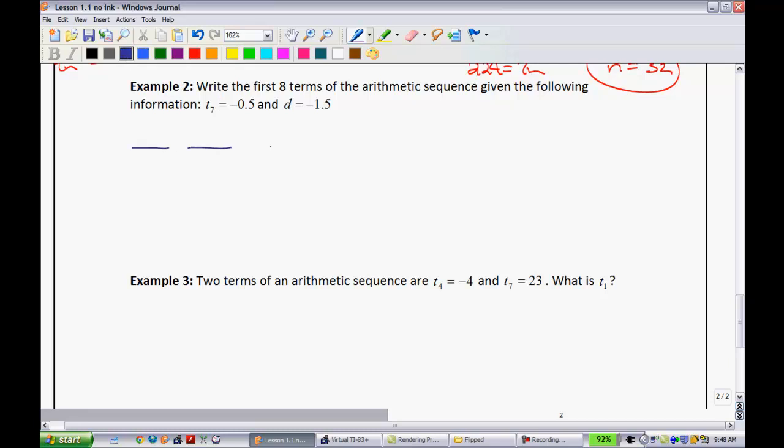So, let's do this. Let's say we have 1, 2, 3, 4, 5, 6, 7, 8 terms. This one being T8. So we have T1, T2, T3, T4, T5, T6, and T7. Those just representing the term numbers.